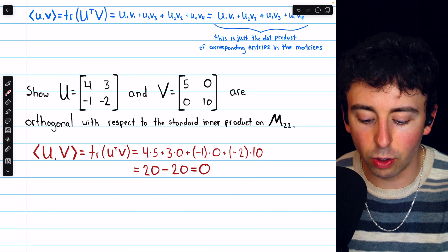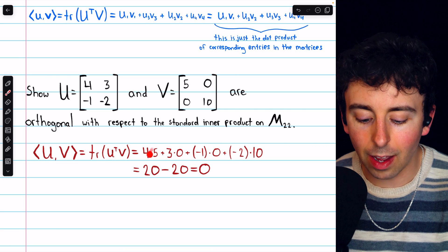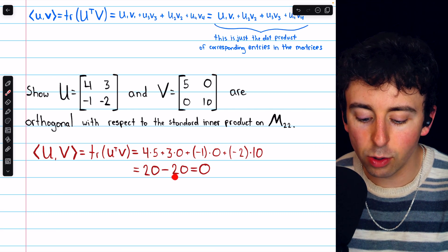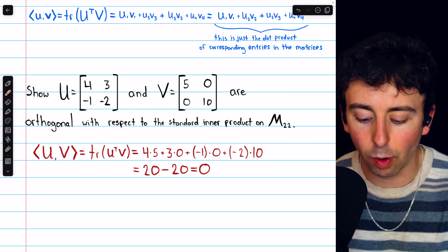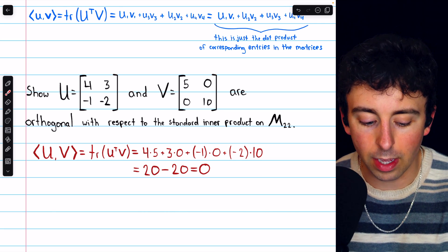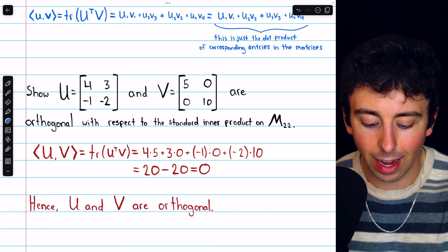In total, we've got two zero terms, and then we have 20 minus 20. And so, indeed, the inner product is equal to zero. So, the vectors, which are matrices in this case, are orthogonal.